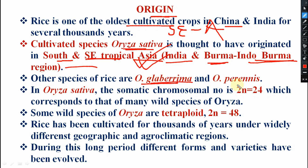Other species of rice are Oryza glaberrima and Oryza perennis. In Oryza sativa, the chromosomal number is 2n = 24, which corresponds to that of many wild species of Oryza. Some wild species are diploid and some will be tetraploid, where 2n = 48. Rice has been cultivated for thousands of years under widely different geographic and agro-climatic regions.